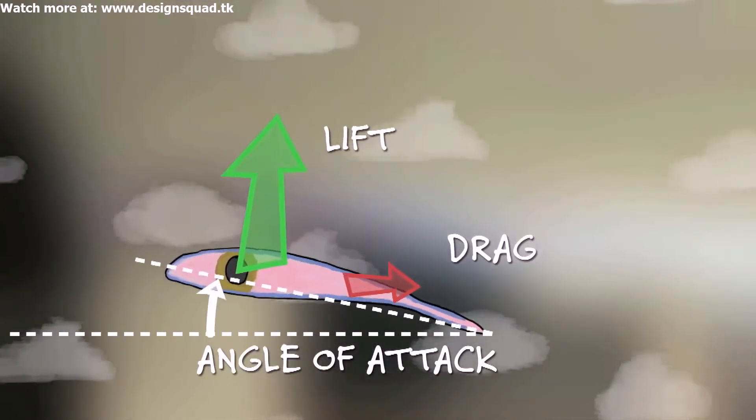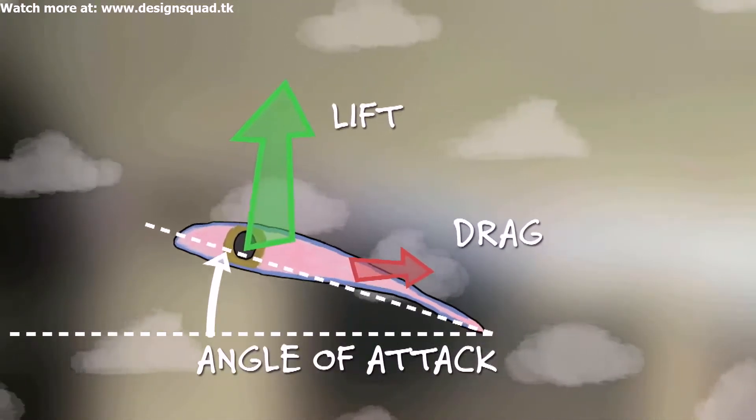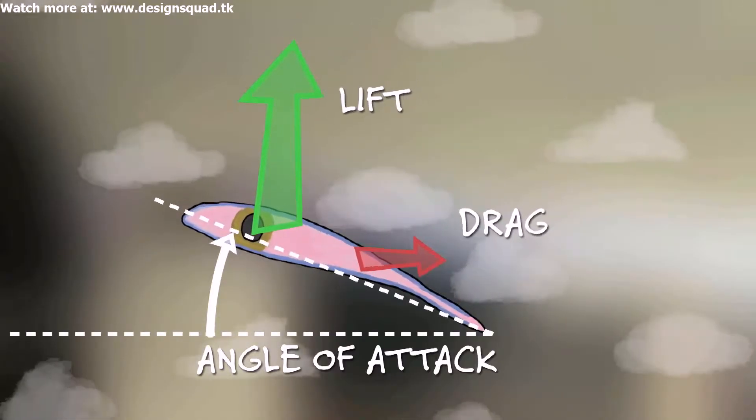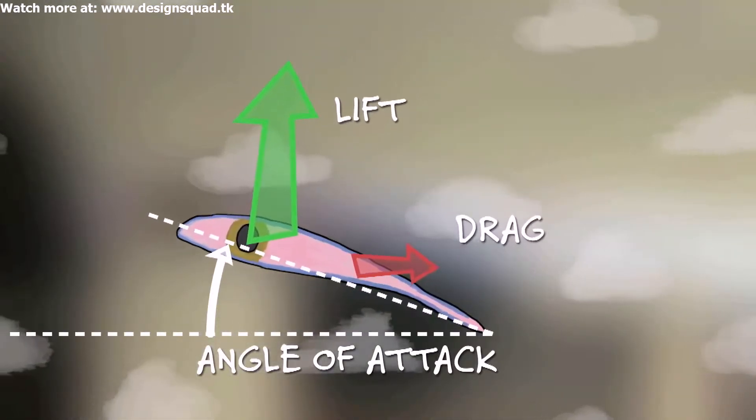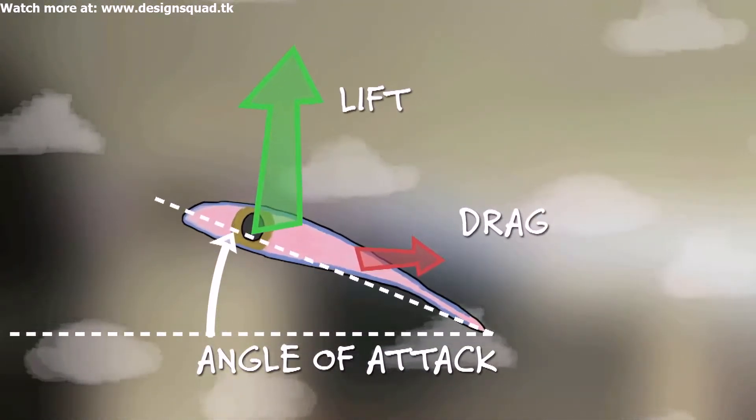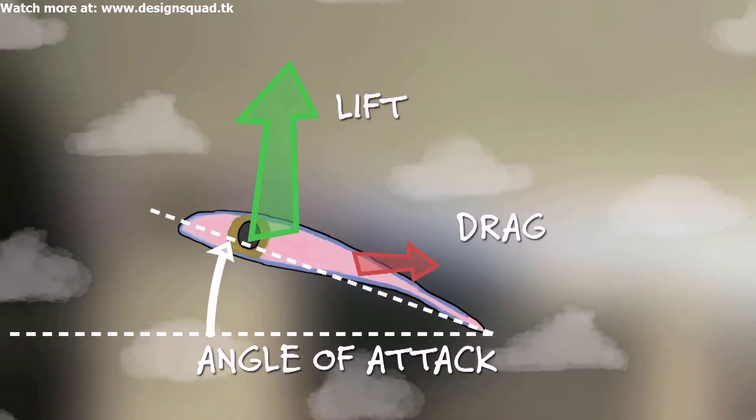If you can find the amount of lift and drag at different angles of attack and then divide lift by drag, you'll find the best combination of more lift and less drag that will make the glider fly as far as possible.